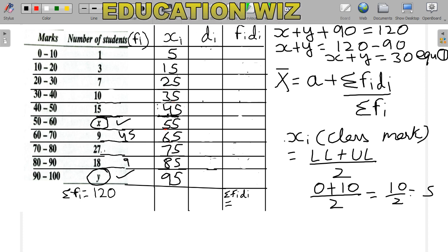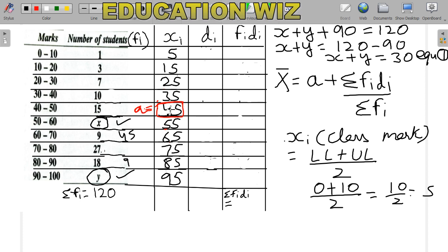Now, how do we find DI? For that we first need the assumed mean. The assumed mean is chosen as the middle-most observation in the XI column. Here there are two middle observations: 45 and 55. We can take either one; I am taking 45 as the assumed mean. So A equals 45.